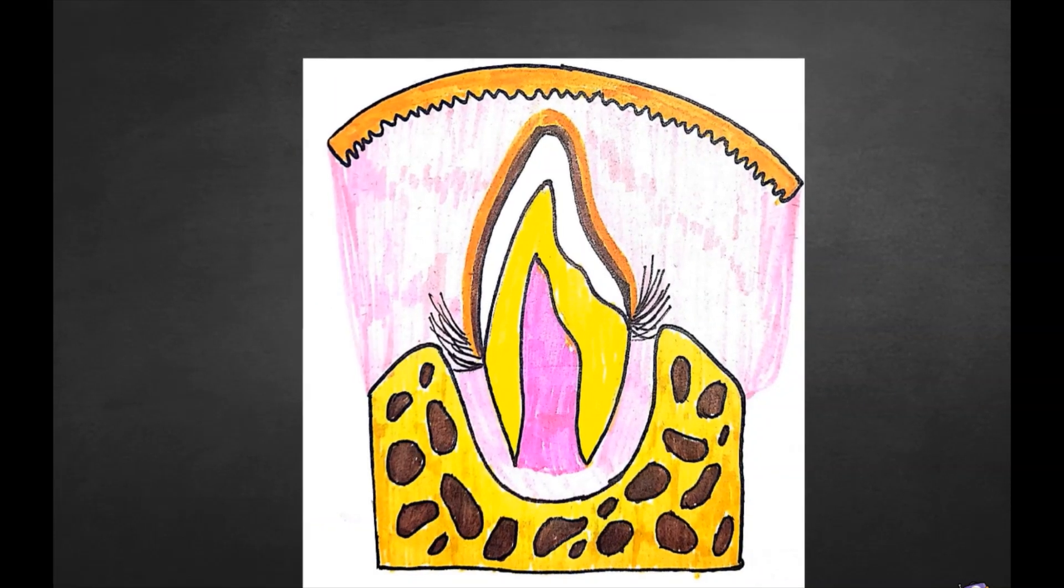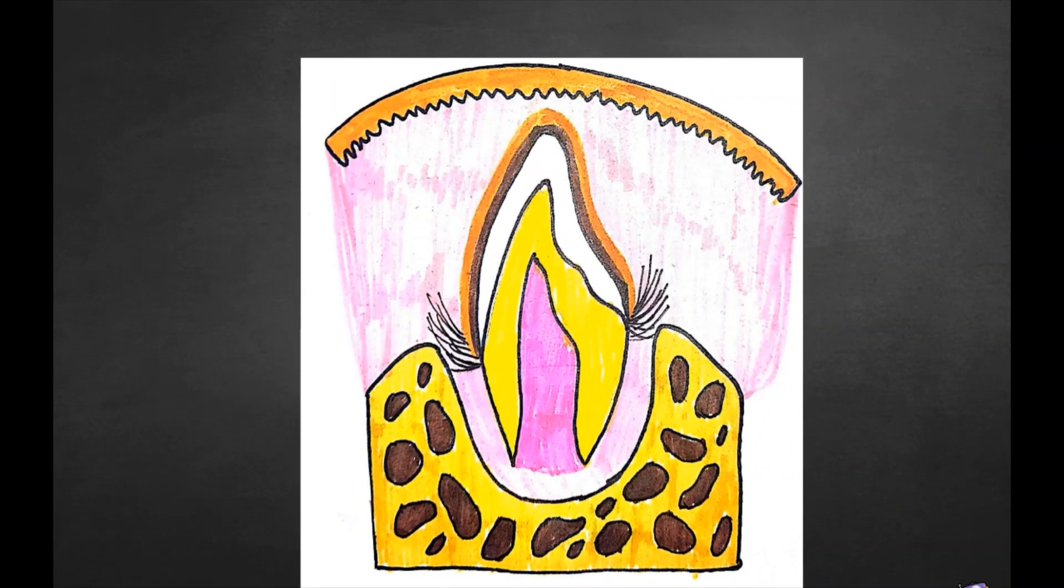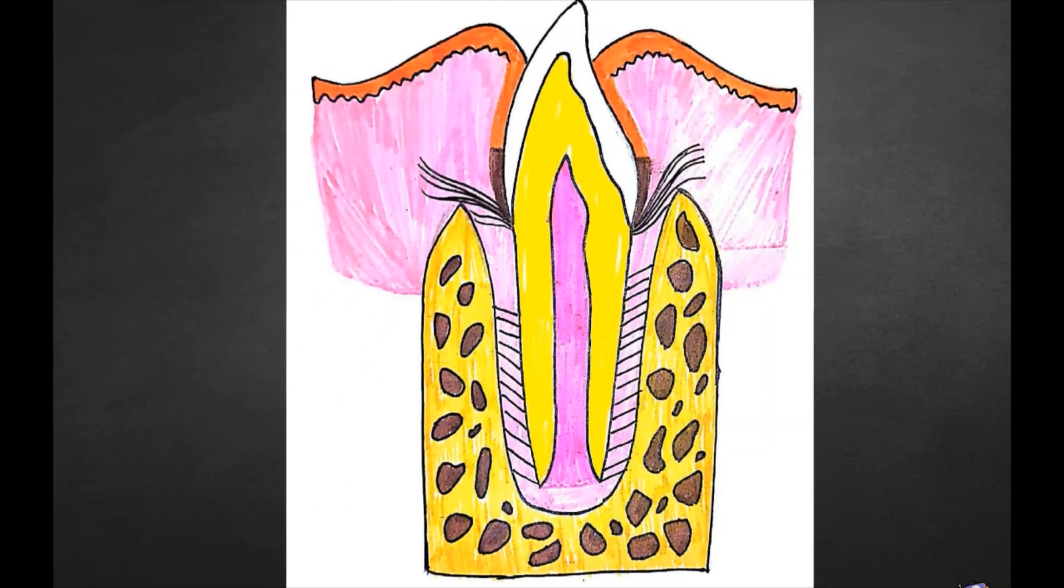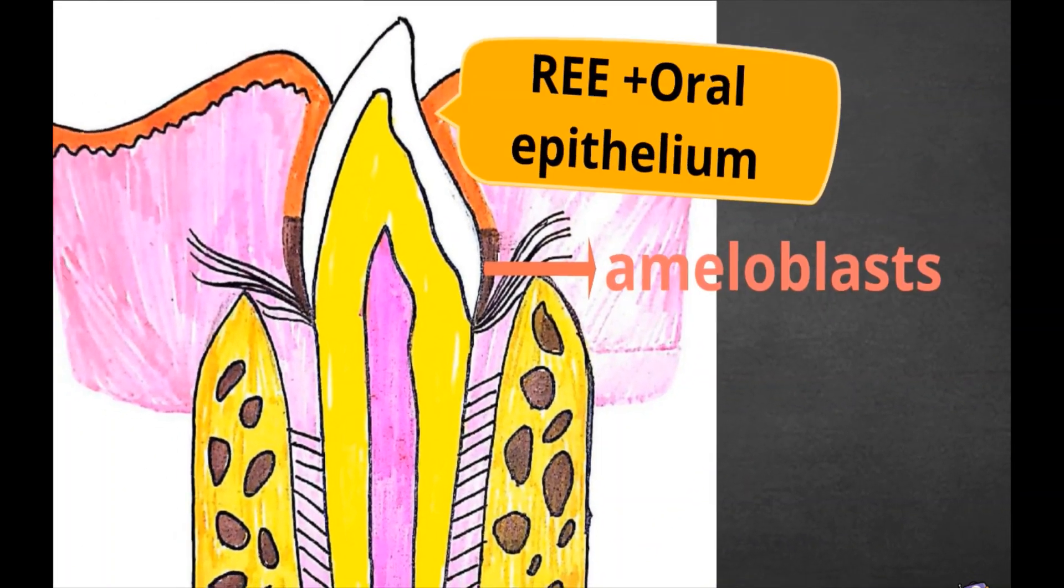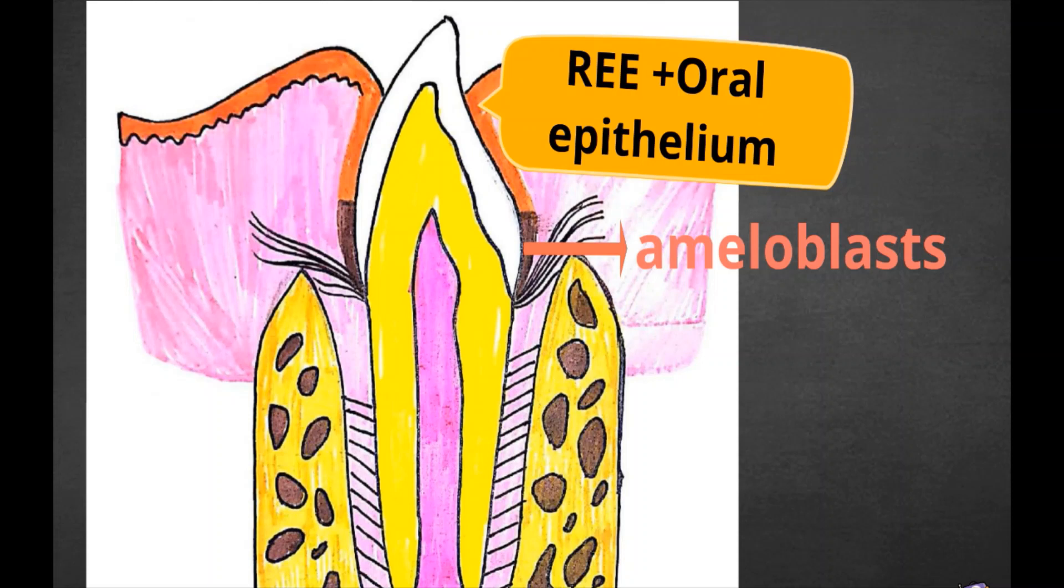With the eruption of teeth, cells of reduced enamel epithelium and oral epithelium join, and when completely erupted the portion of tooth immediately apical to enamel gets covered by junctional epithelium while the cervical region is still covered by ameloblasts. In this figure we can see that clearly.